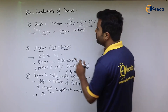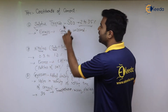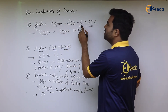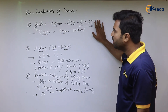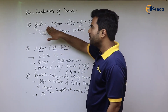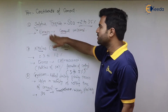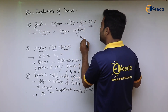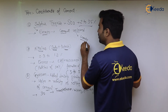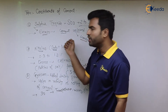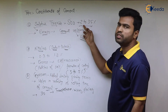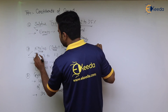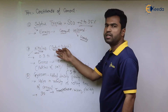The next constituent is sulfur trioxide; its chemical formula is SO₃ and its percentage is 2 to 3.5 percent. If sulfur trioxide is provided in excess, it also makes the cement unsound — causing cracks and expansion in the cement. Care should be taken that it remains within the range of 2 to 3.5 percent.